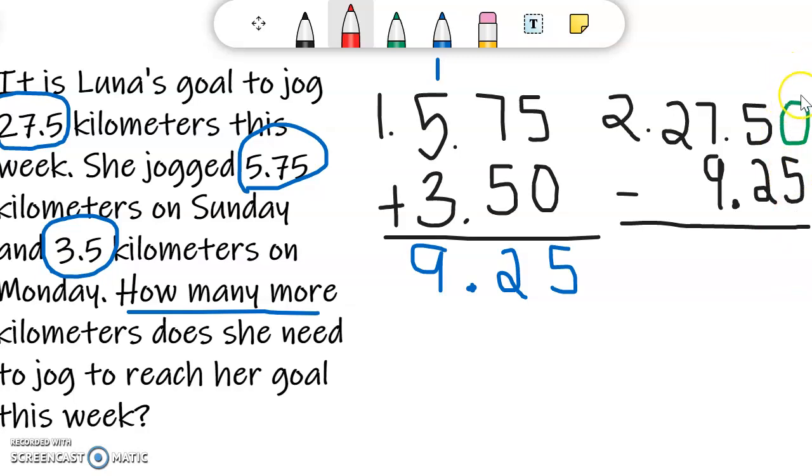Since 0 cannot subtract 5, I'm going to regroup and borrow 10 from the tenths place. So the 5 becomes a 4 because I borrowed 10, and the 0 becomes a 10 because 0 plus 10 is 10. 10 subtract 5 is 5. Now I'm ready to move on to the tenths place. 4 subtract 2 is 2. I'm going to go ahead and bring my decimal point straight down.